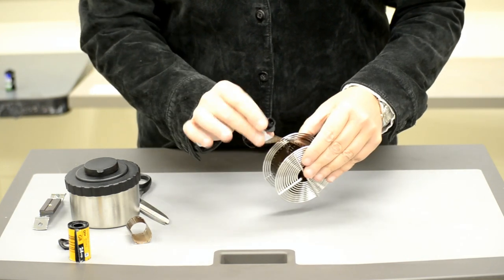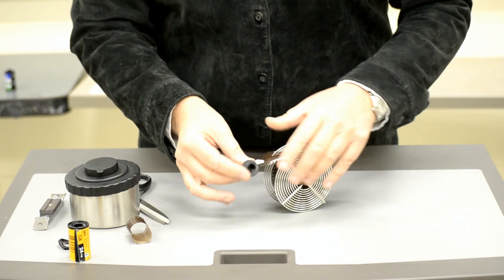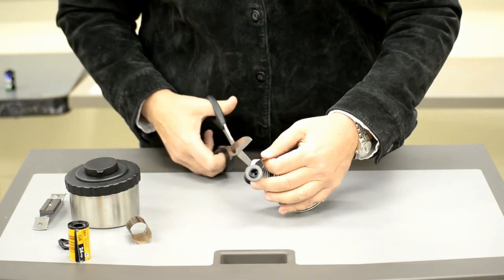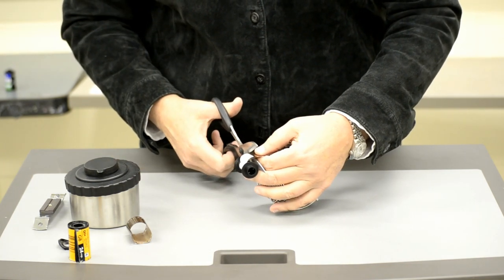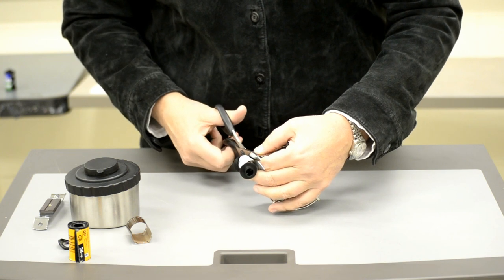At the very end, you get to the spool itself, and you want to cut that off or peel it off. If you cut slowly, you won't cut yourself.